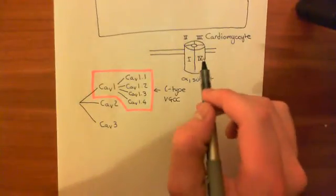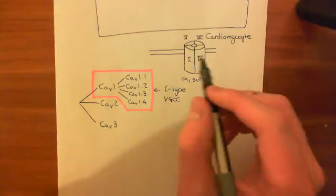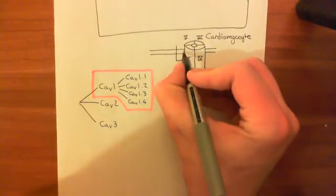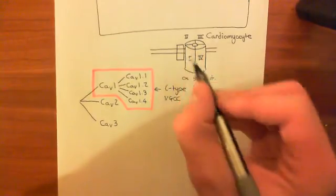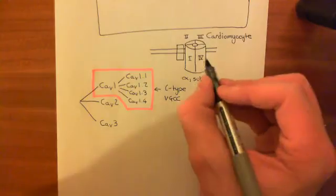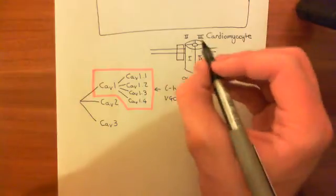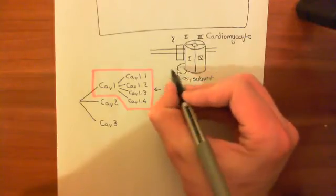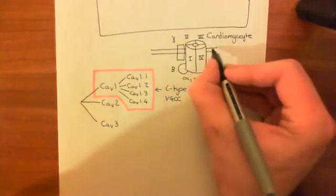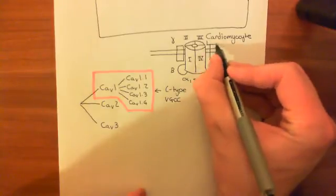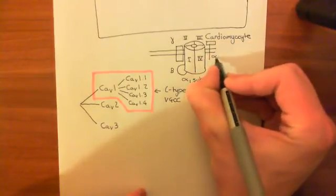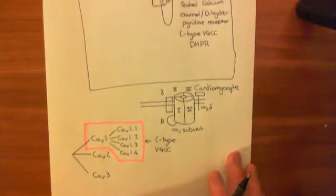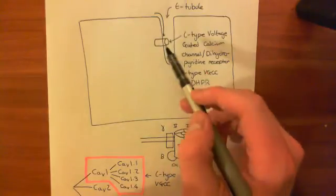That is the alpha-1 subunit of the voltage-gated calcium channel. Voltage-gated calcium channels usually have a bunch of auxiliary subunits alongside. The alpha-1 subunit is the main pore-forming subunit, but there are other subunits that attach on and moderate its function: the gamma subunit, the beta subunit, and the alpha-2 delta subunit. You have these L-type voltage-gated calcium channels in the membrane of your T-tubule.